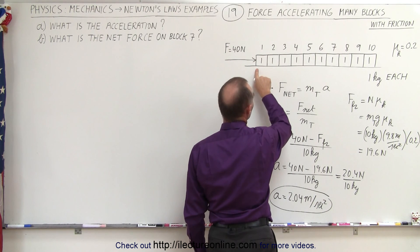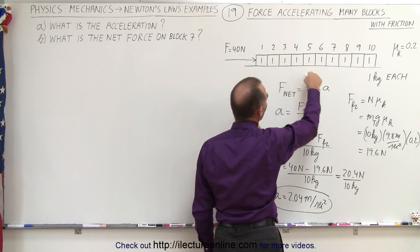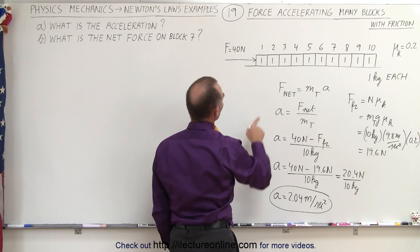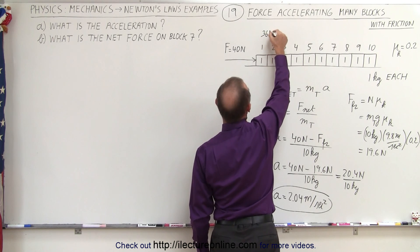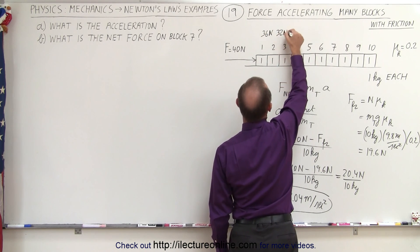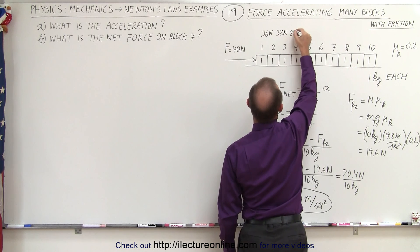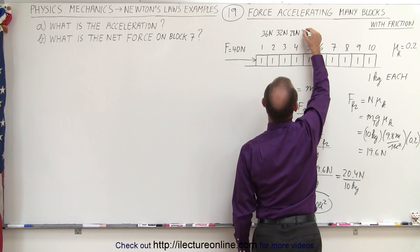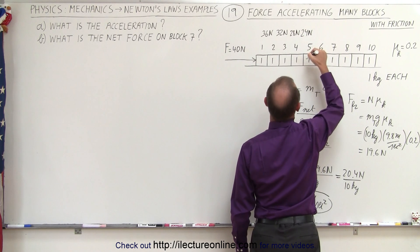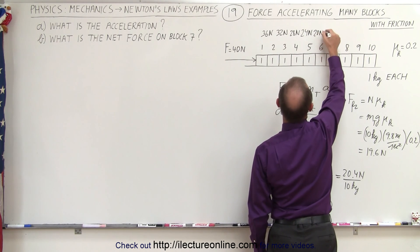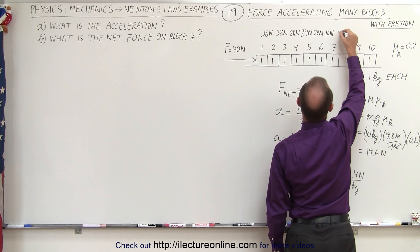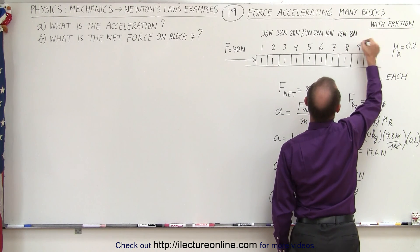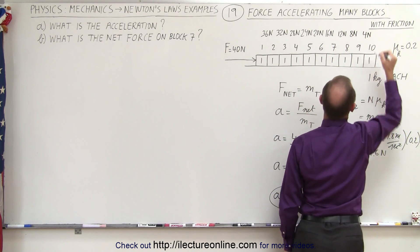That 4 newtons per block will be used both for the acceleration of the block and to overcome the friction for each block. So we have 40 newtons pushing on block 1, 36 newtons pushing against block 2, 32 against block 3, 28 against block 4, 24 against block 5, 20 against block 6, 16 against block 7, 12 against block 8, 8 against block 9, and 4 newtons against block 10.